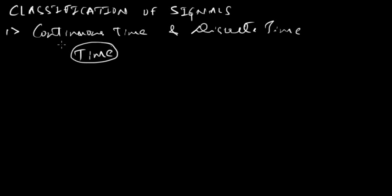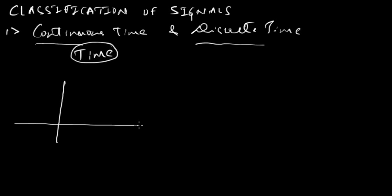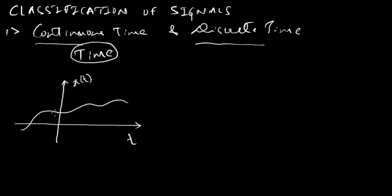Now let us try to understand what we mean by continuous time signals and discrete time signals. For that, consider this diagram. The x-axis is represented using a variable called time t, and the y-axis is our signal x of t. Our signal looks something like this — this is called a continuous time signal.